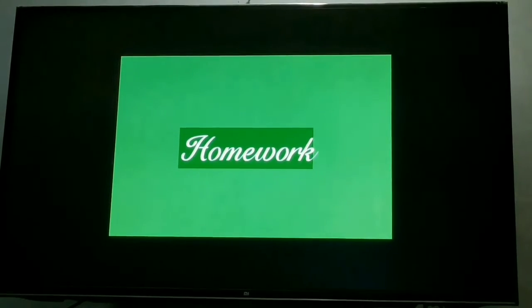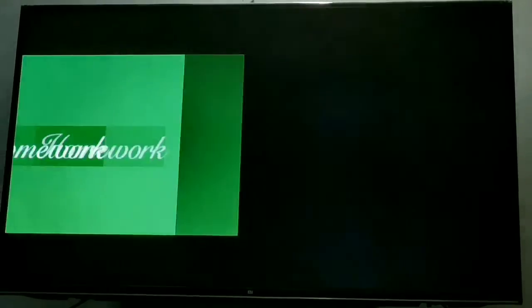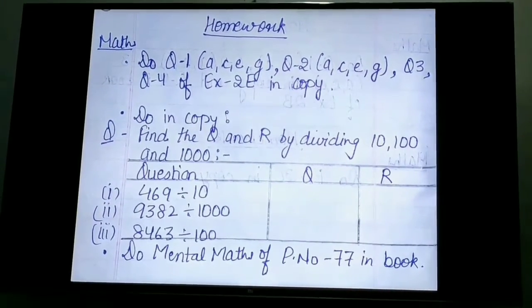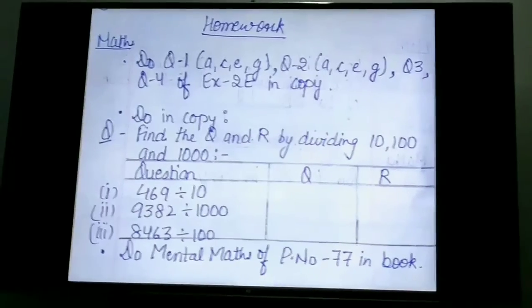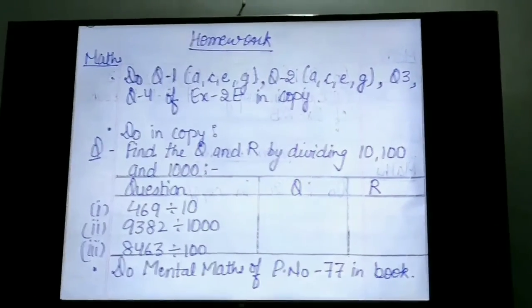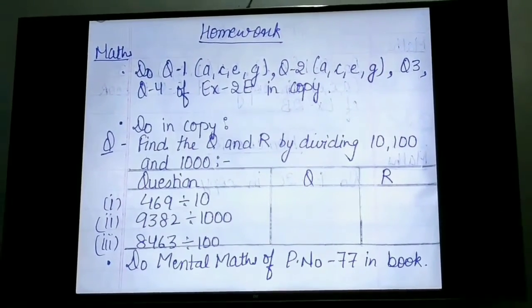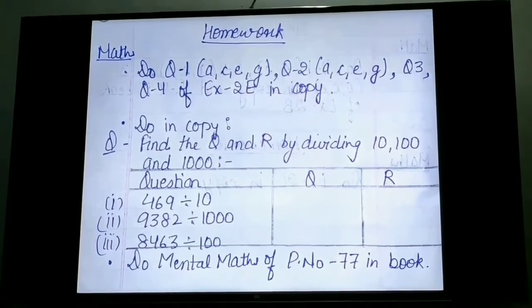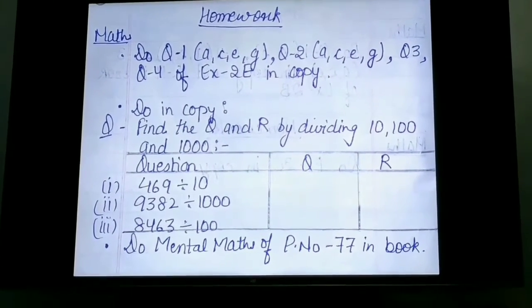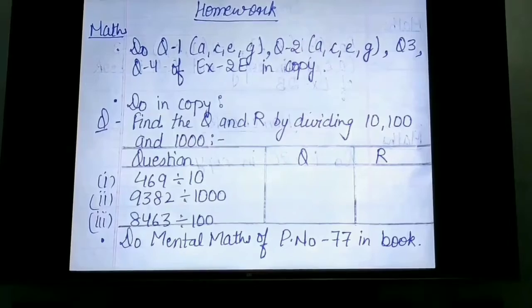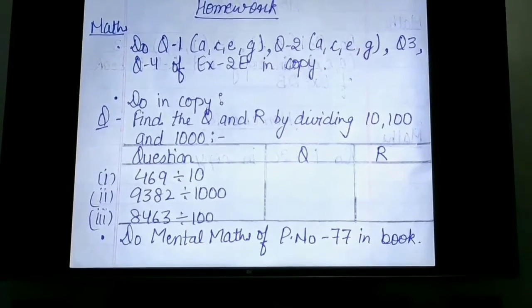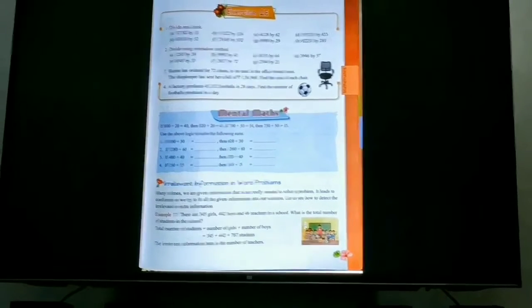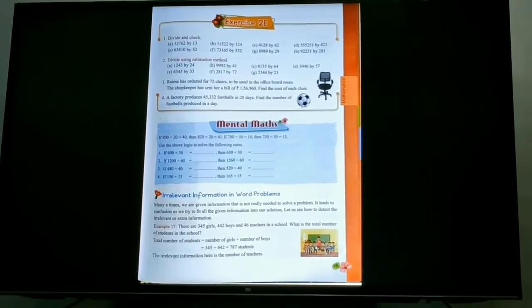Now, it's time to practice the question. So, your homework is: do question 1 A, C, E, G part, question 2 A, C, E, G part, and question 3 and 4 of exercise 2E in copy. Do one extra question given in your copy and then do mental maths of page number 77 in book. Exercise and mental maths both can be found on page number 77.